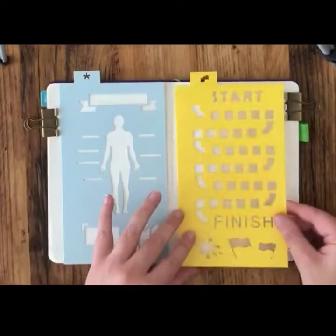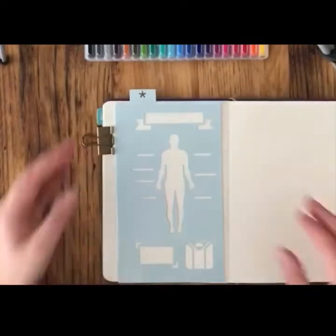So on the left here you can see my body stencil, measurement stencil, and on the right is the goal tracker stencil.